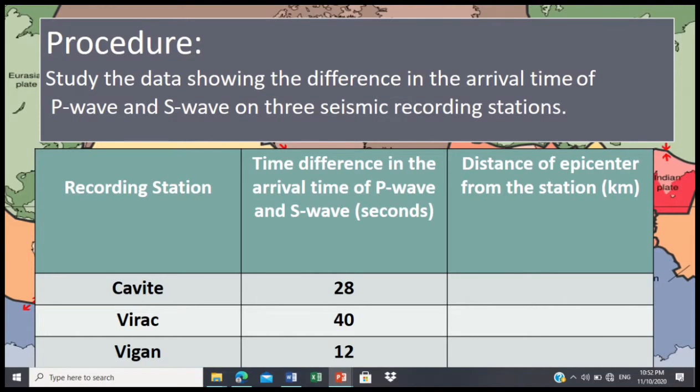For our procedure, study the data showing the difference in the arrival time of P-wave and S-wave on three seismic recording stations. For Cavite, we have 28 seconds; Virac, 40 seconds; Vigan, 12 seconds.